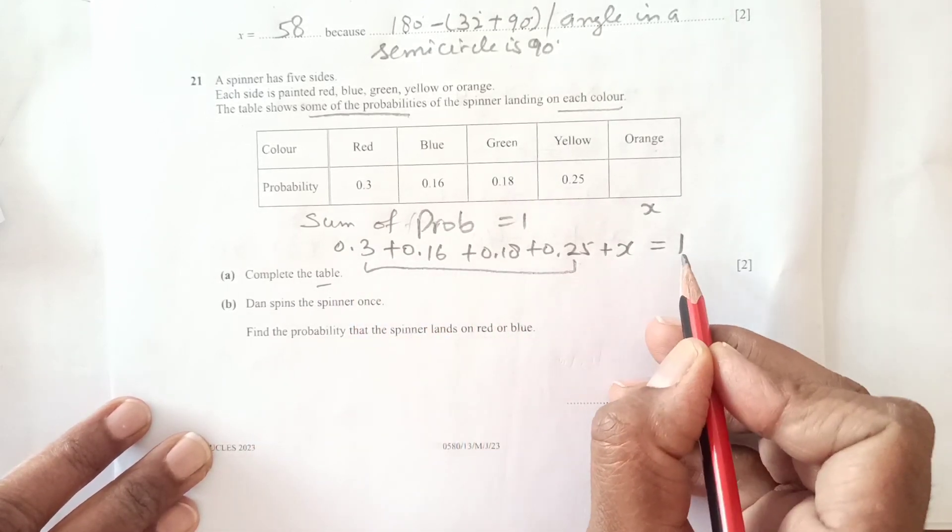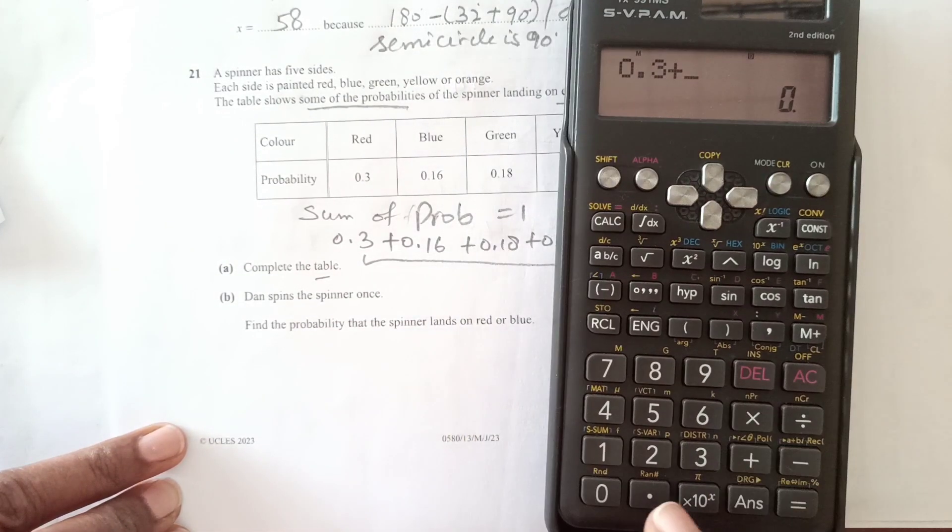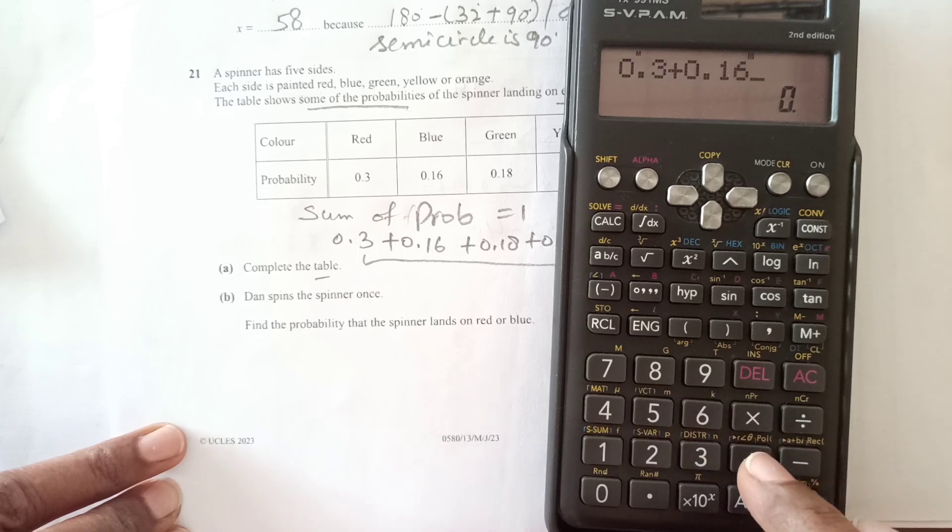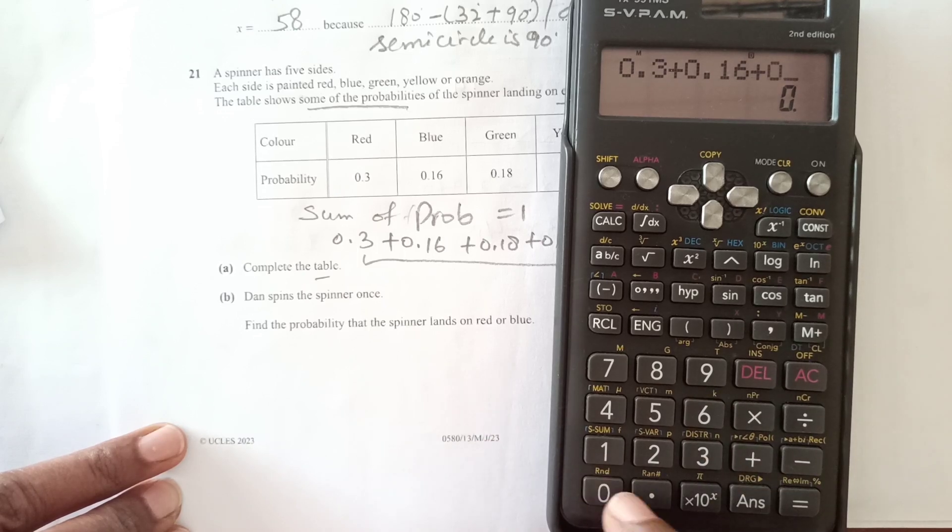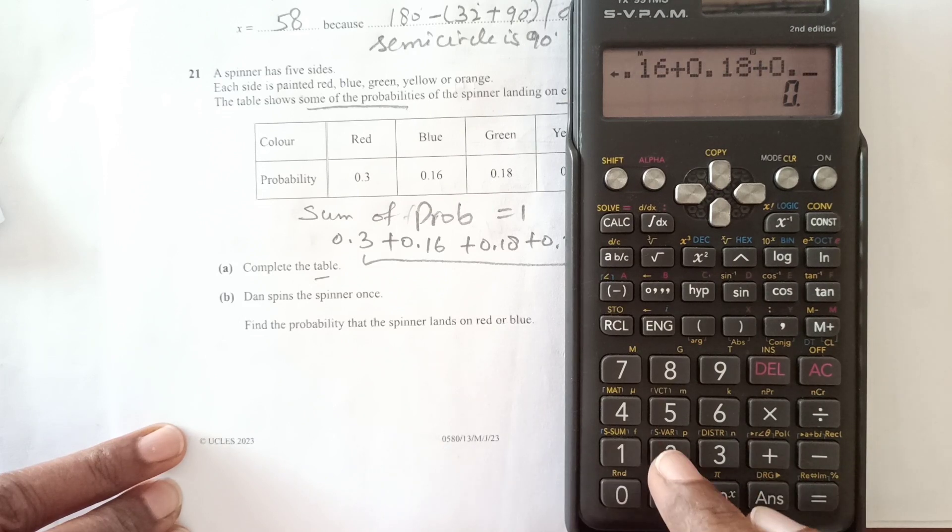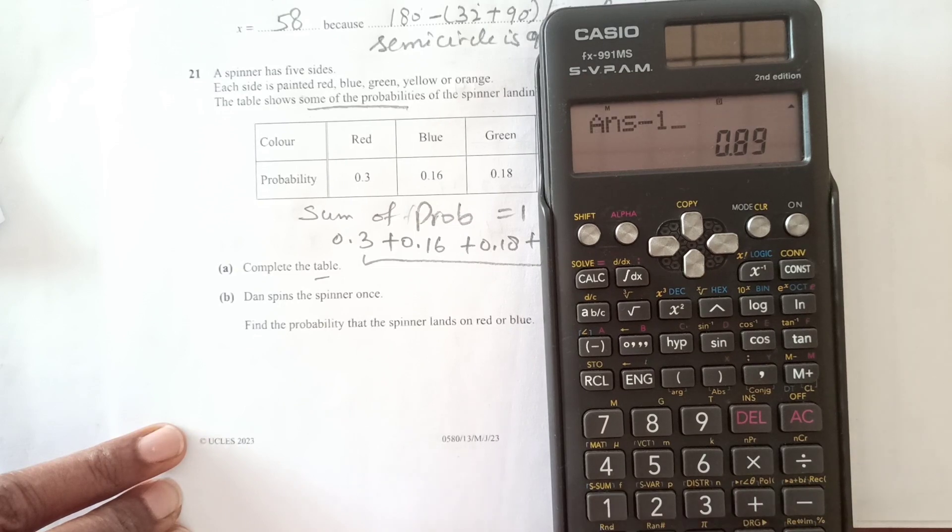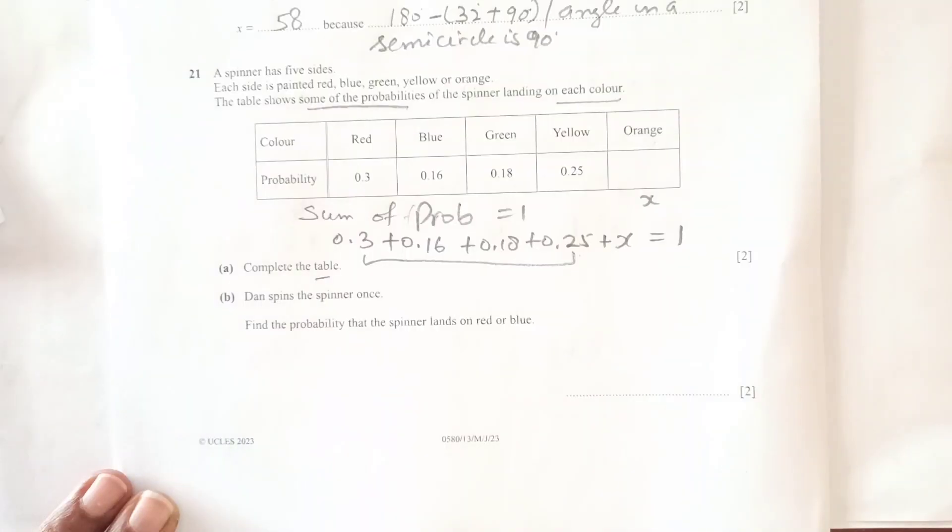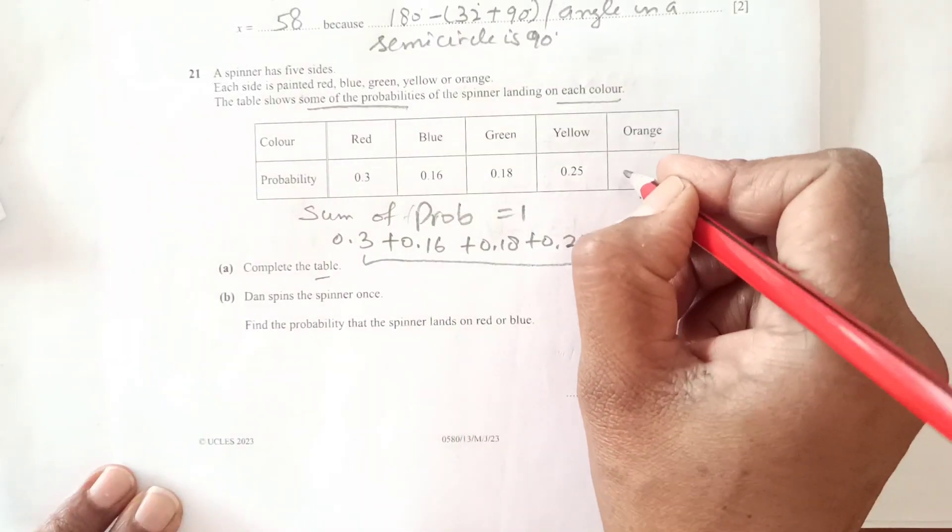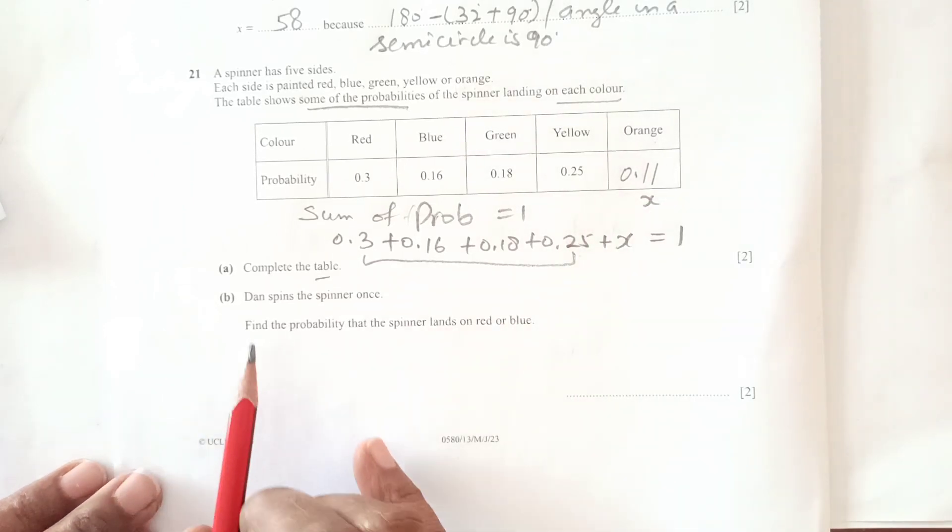We add them and subtract from 1, which gives us 0.11. So 0.11 is the final answer.